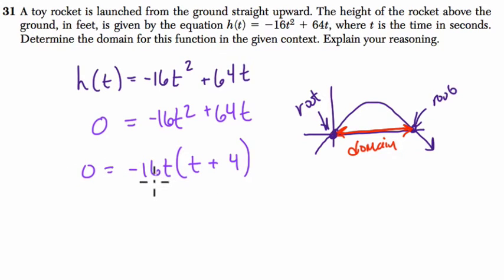So -16t could equal zero, t plus four could equal zero. Either way, you get a product of zero. If -16t is zero, it's one scenario that gets us a product of zero. The other one is where t plus four is zero.